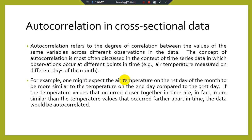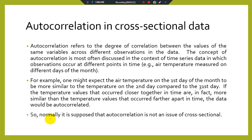For example, one might expect the air temperature on the first day of the month to be more similar to the temperature on the second day compared to the thirty-first day. If temperature values that occur closer together in time are more similar than those farther apart in time, the data would be autocorrelated or serially correlated.